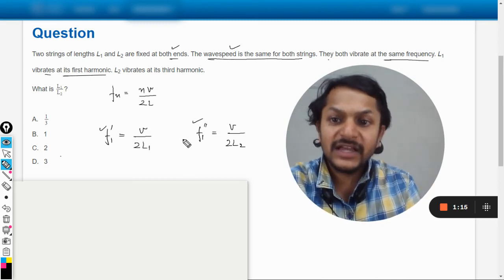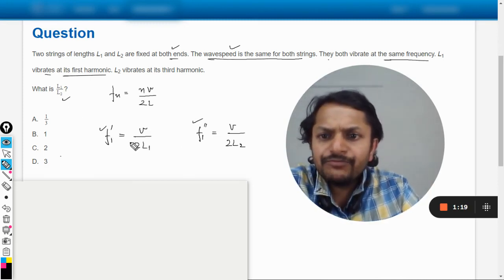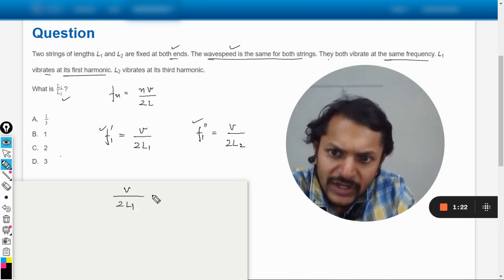They can be compared with each other. So you just need to find the ratio. We can just equate these two: v divided by 2L1 is equal to v divided by 2L2.